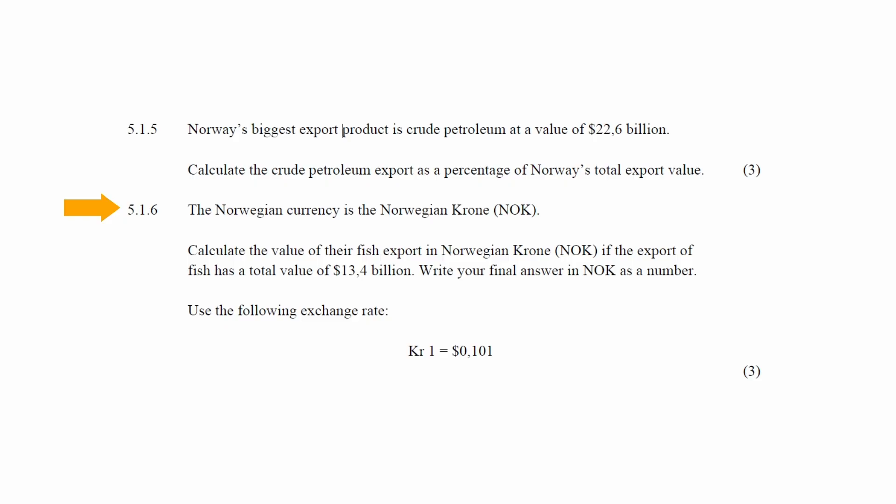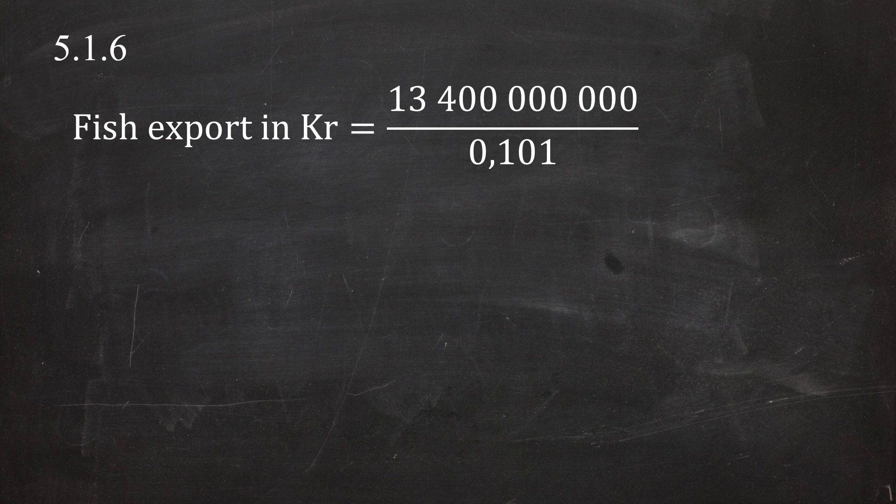In Question 5.1.6, it is stated that the Norwegian currency is the Norwegian Krone. You are instructed to calculate the value of the fish export in Norwegian Krone, given that the export of fish has a total value of 13.4 billion U.S. dollars, using the exchange rate: 1 Krone equals 0.101 U.S. dollars. The value of the fish export in Norwegian Krone equals 13,400,000,000 divided by 0.101, which equals 132,673,267,327 Krone.